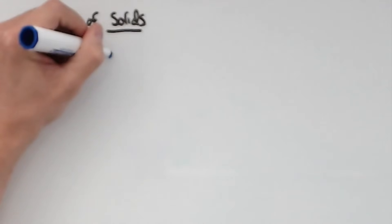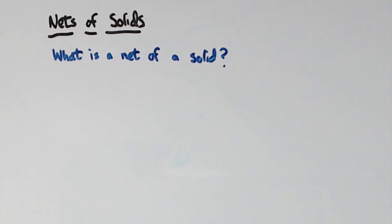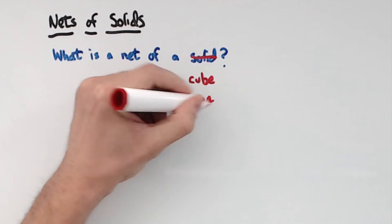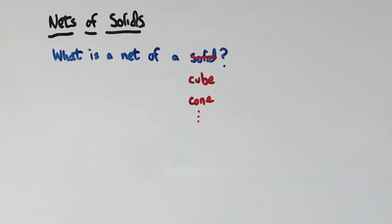A typical question about this topic would be, what is a net of a solid? The only difference is really instead of saying solid, the question has a particular 3D shape. For example, what is the net of a cube? Or what is the net of a cone? And so on.